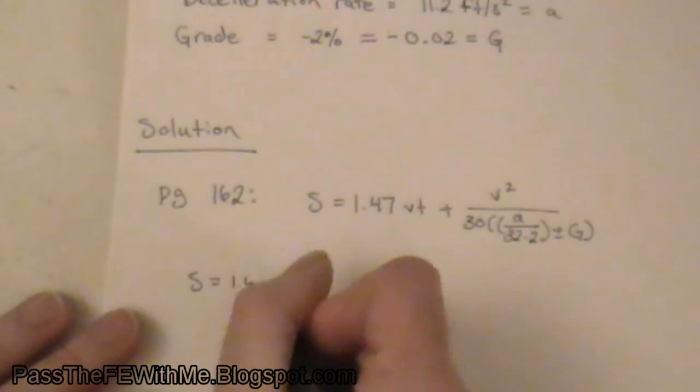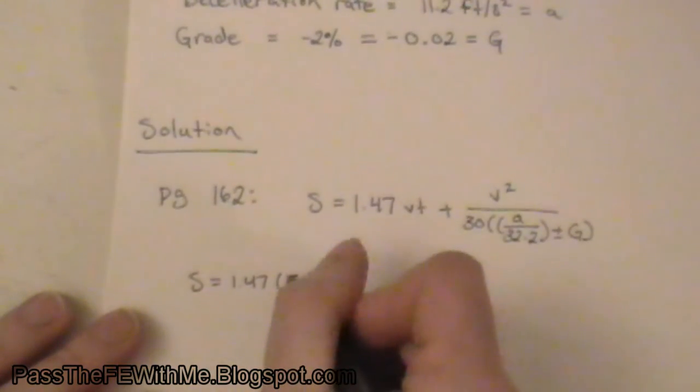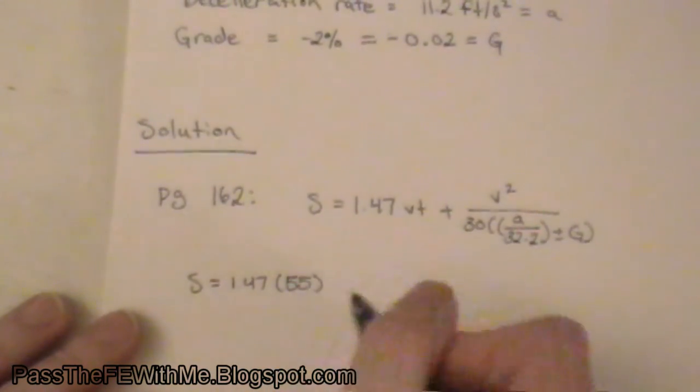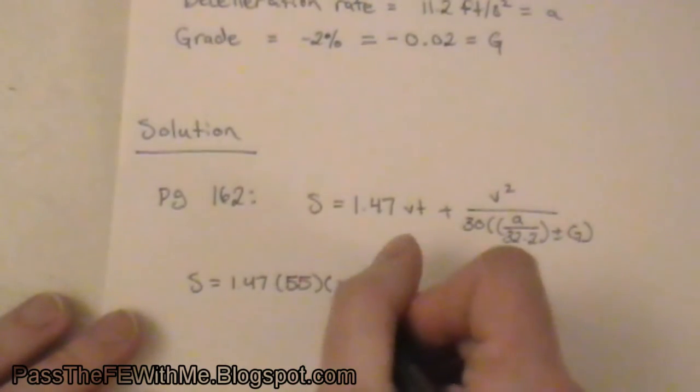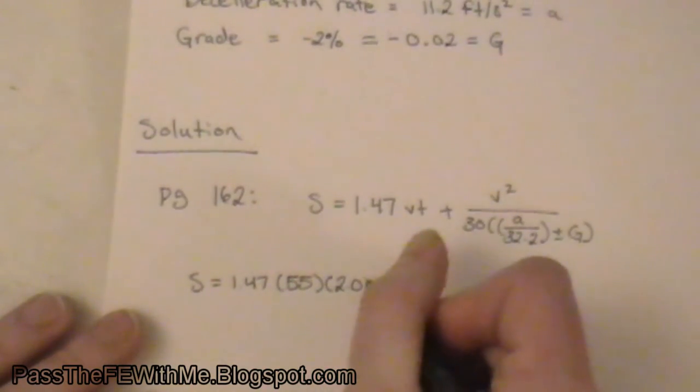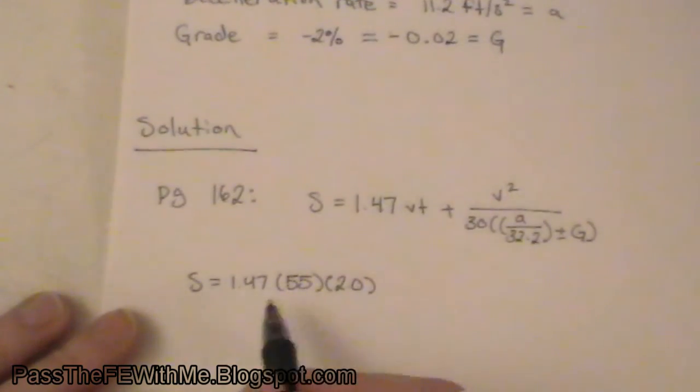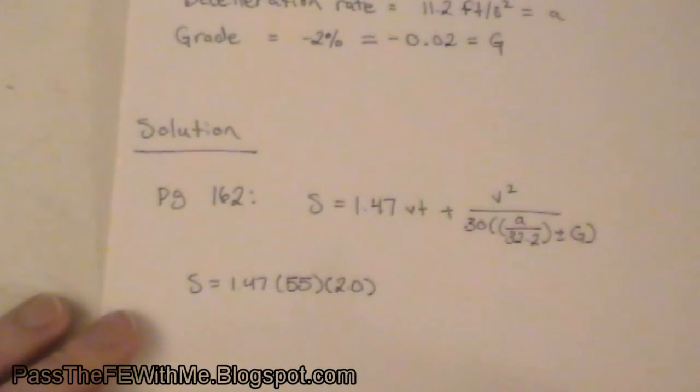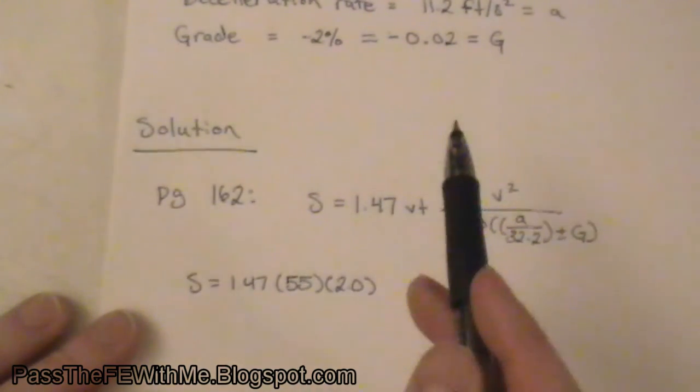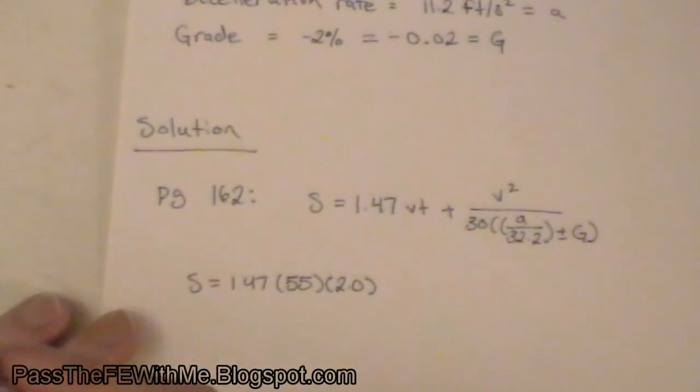S equals 1.47 times 55, and on this particular problem I wouldn't worry about the units, because you can see there's these conversion factors built into every part of it. So the units actually shouldn't be consistent. Just make sure the units are given match the units defined in that variable list at the top of page 162.